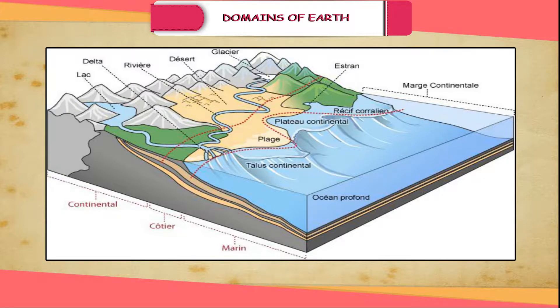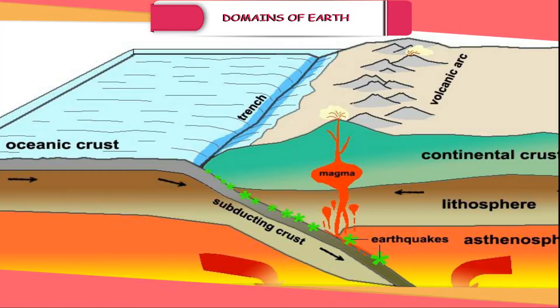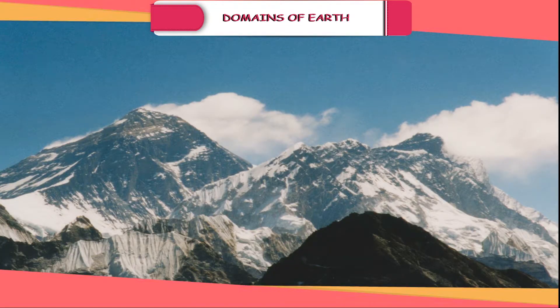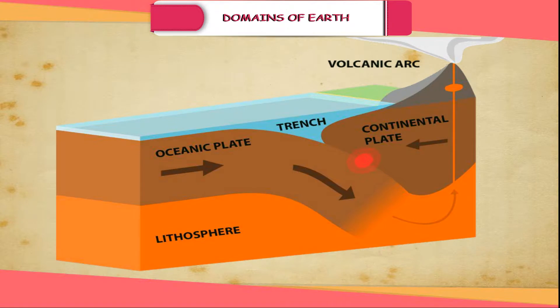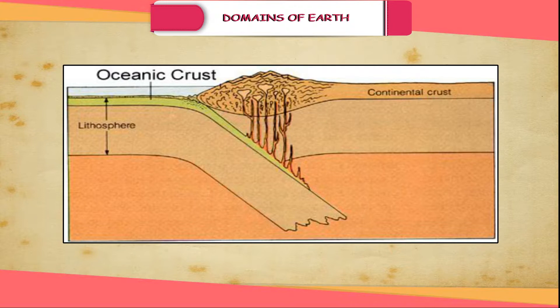The remaining 29% is above the surface of water in the form of landmasses. The level of water is called the sea level. The height or depth of any point on the lithosphere is measured with reference to this point. For example, Mount Everest, the highest point on the lithosphere, is 8,848 meters above the sea level. Similarly, Mariana Trench in the Pacific Ocean, the deepest point on the lithosphere, is 11,034 meters below the sea level.